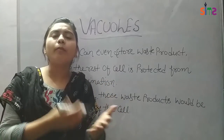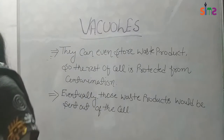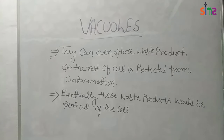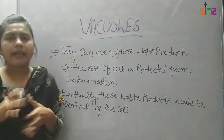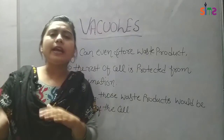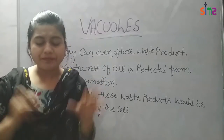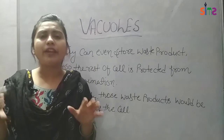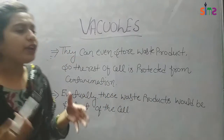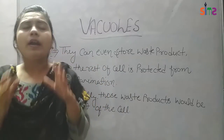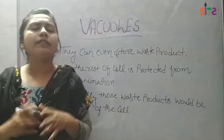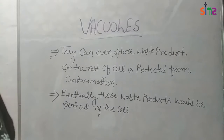Eventually those waste products are sent out of the cell — the cell is protected. We have seen in our Golgi apparatus and the endomembrane system that proteins are packaged and membranes are fused to send materials to different destinations. Similarly, vacuoles package nutrients, food, or waste products to protect the cell. In amoeba there are many types of vacuoles, including food vacuoles.